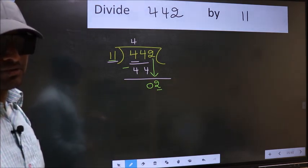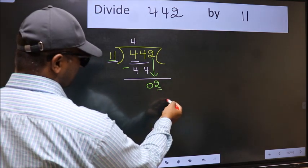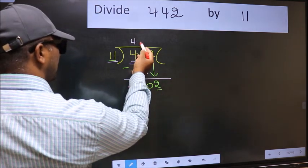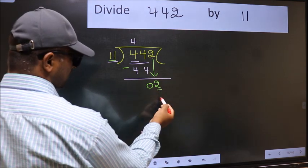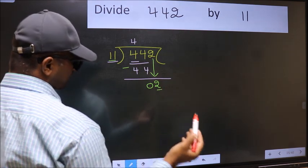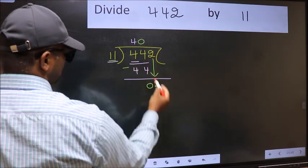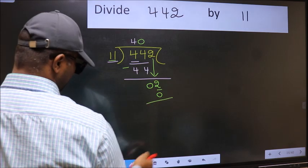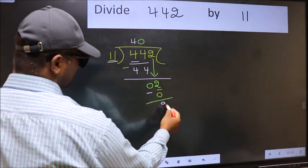Instead, what you should think of doing is, which number should we take here? If I take 1, we will get 11. But 11 is larger than 2. So what we should do is, we should take 0. So 11 into 0, 0. Now you should subtract. 2 minus 0, 2.